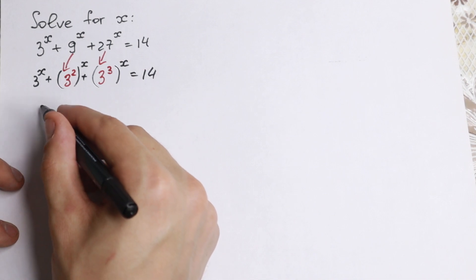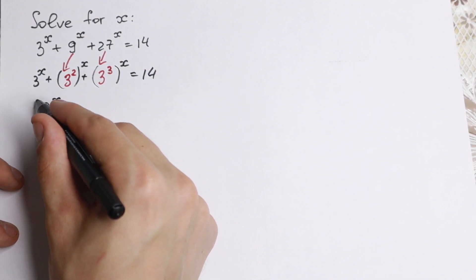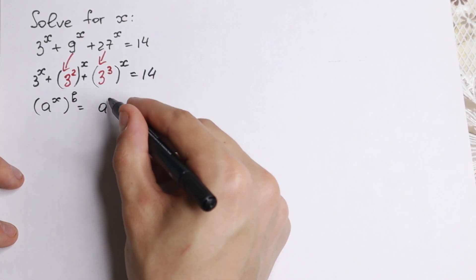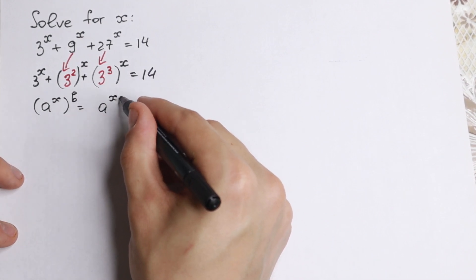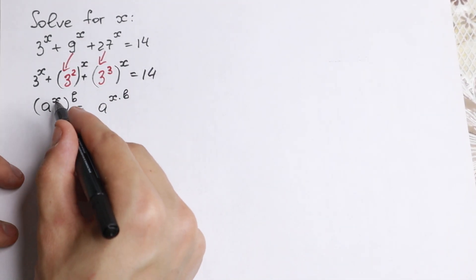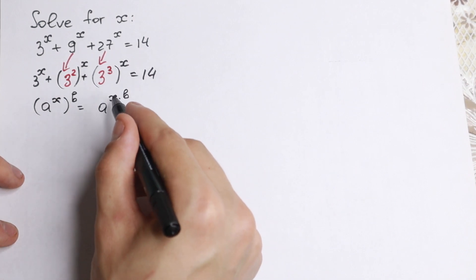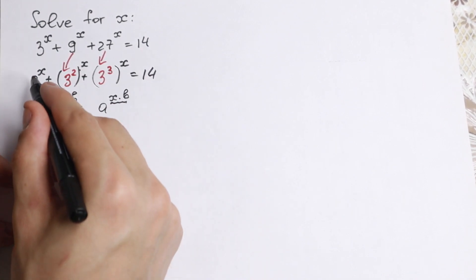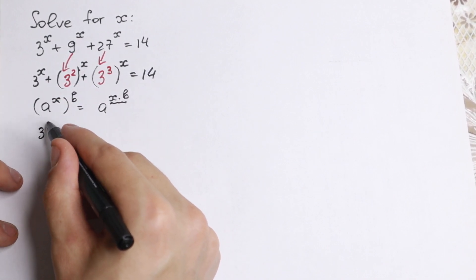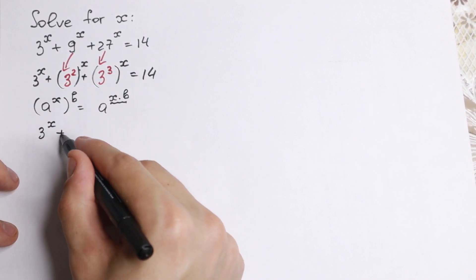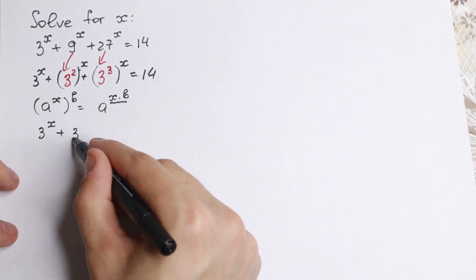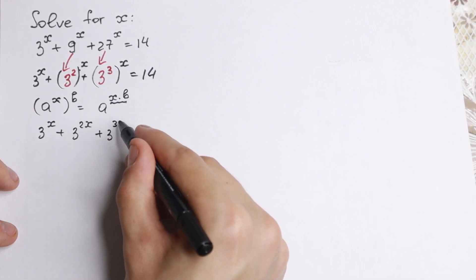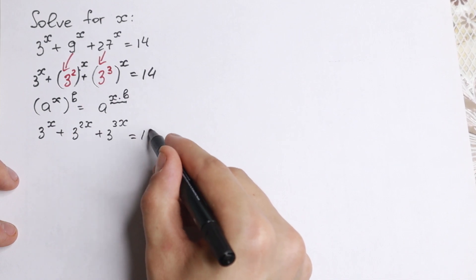We need to know a really good rule: a to the x, raised to the power b, can be written as a to the power x times b. Using this rule right here, we get 3 to the x, plus 3 to the power 2x, plus 3 to the power 3x, equal to 14.